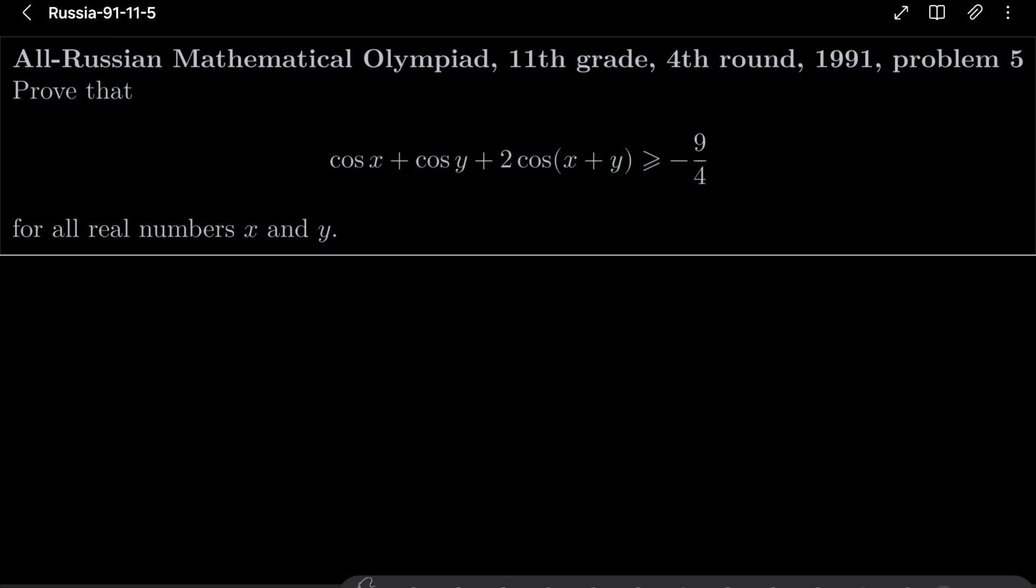We wish to prove that cosine of x plus cosine of y plus 2 times cosine of (x plus y) is greater than or equal to minus 9 over 4 for all real numbers x and y.